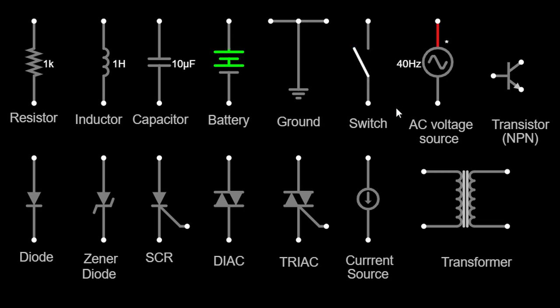When dealing with alternating current AC circuits, we use an AC voltage source symbol. It represents a source that generates alternating current. The symbol usually consists of a circle with a wavy line inside, indicating the sinusoidal nature of AC voltage.